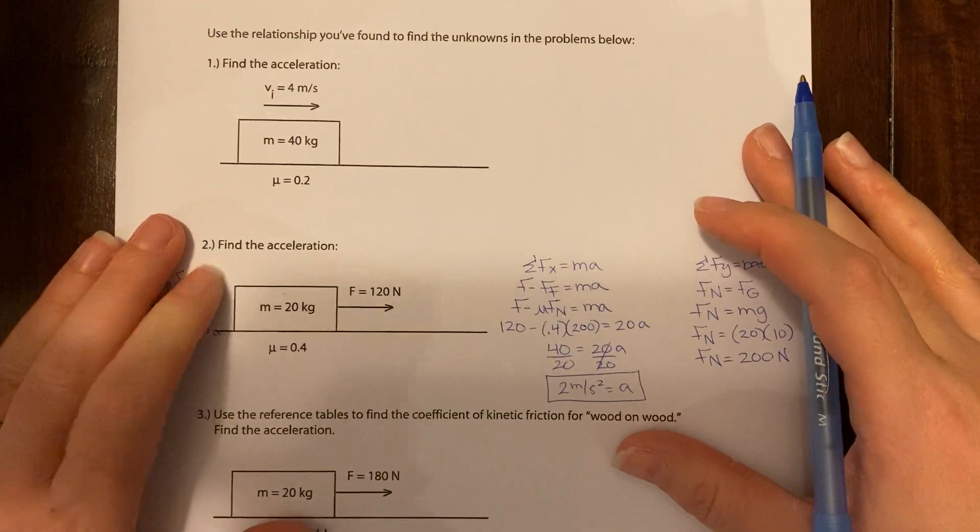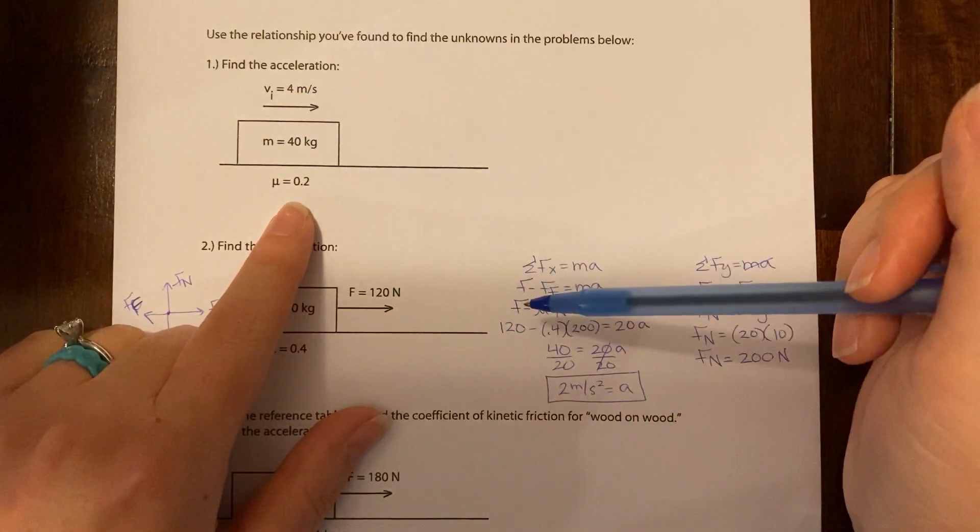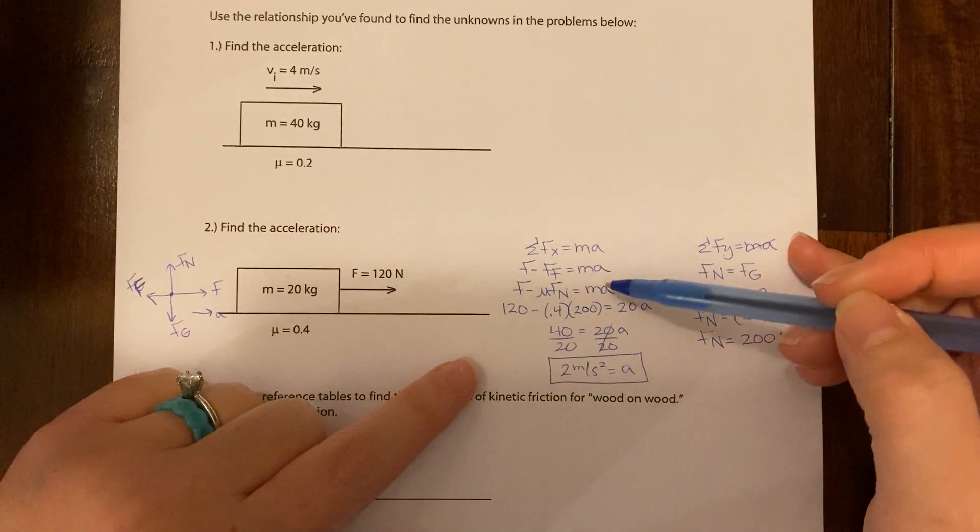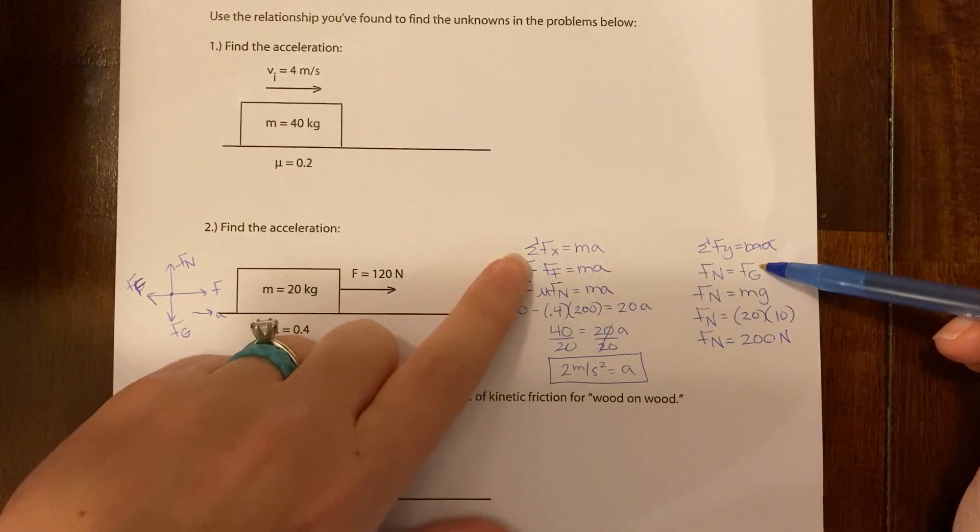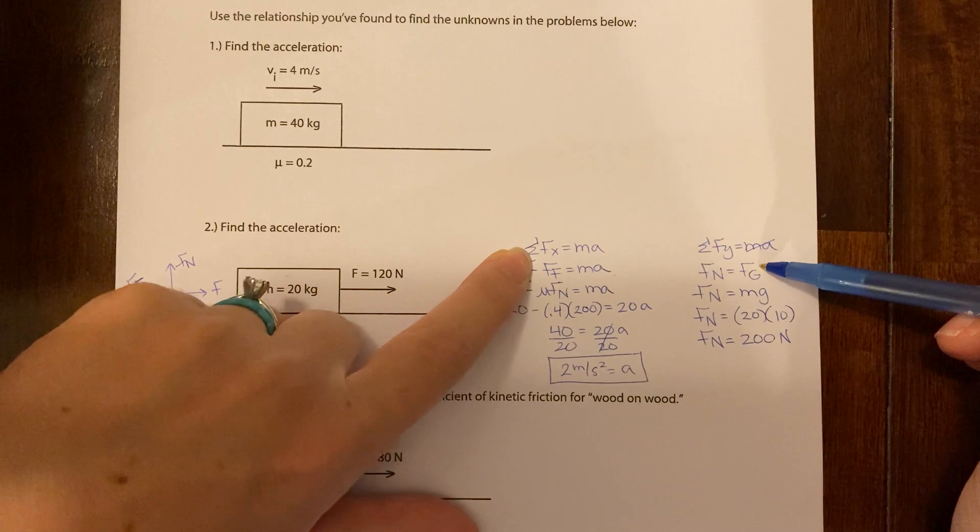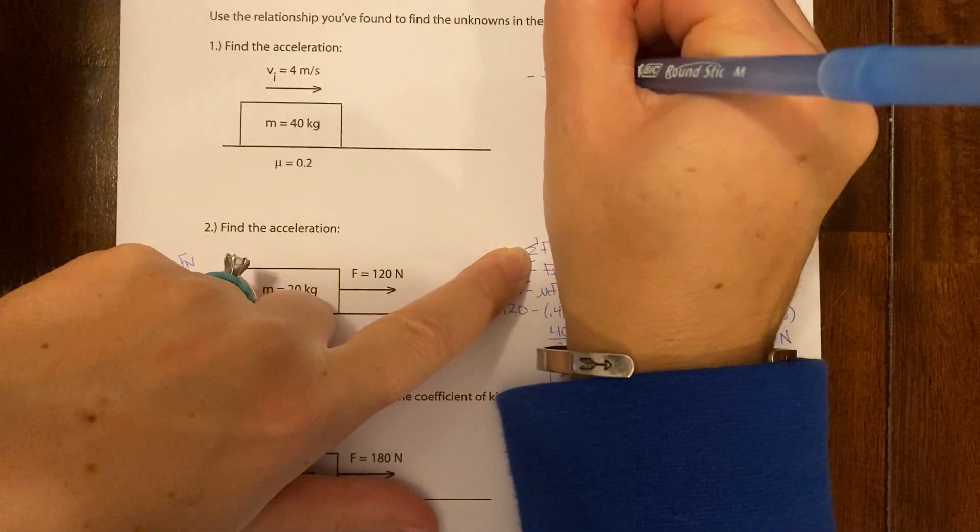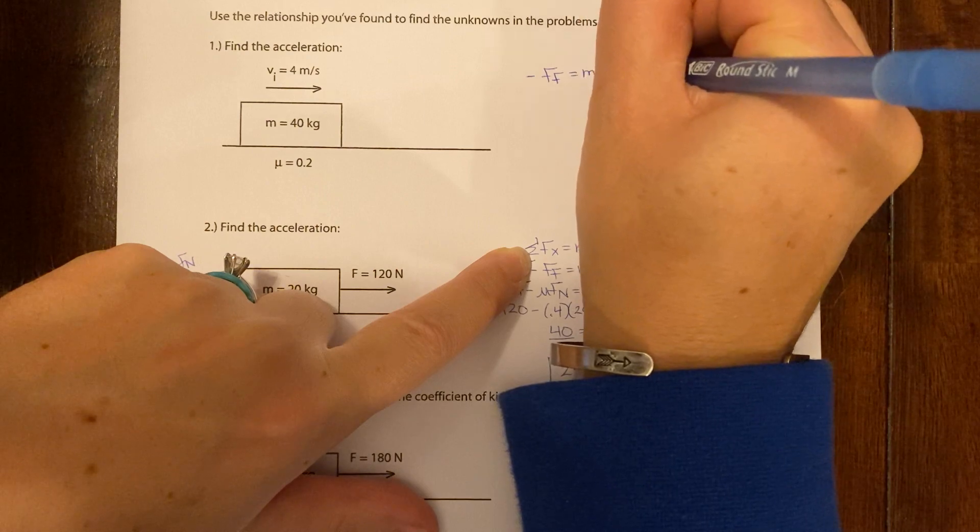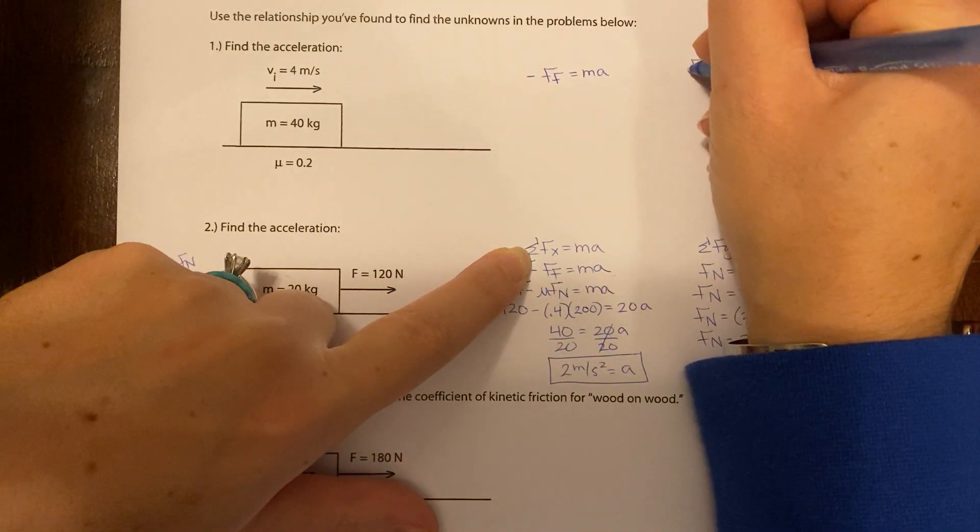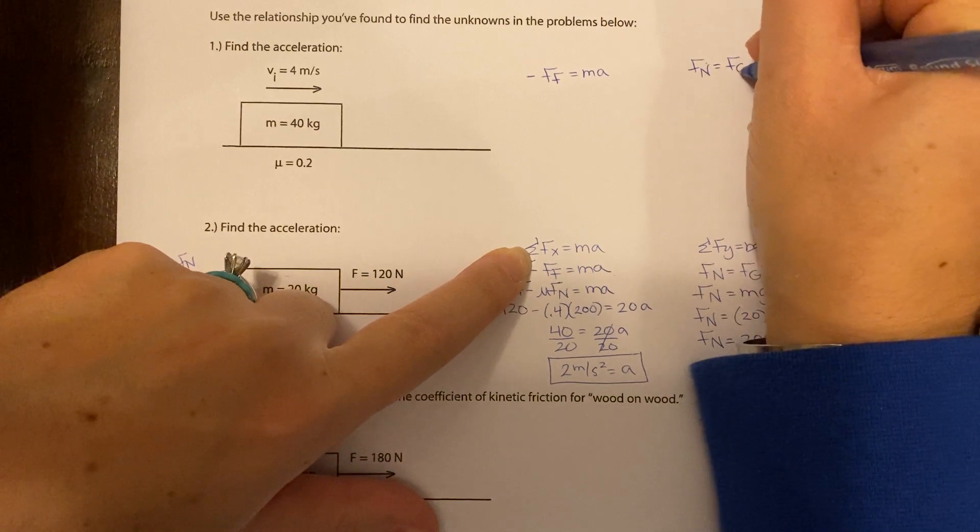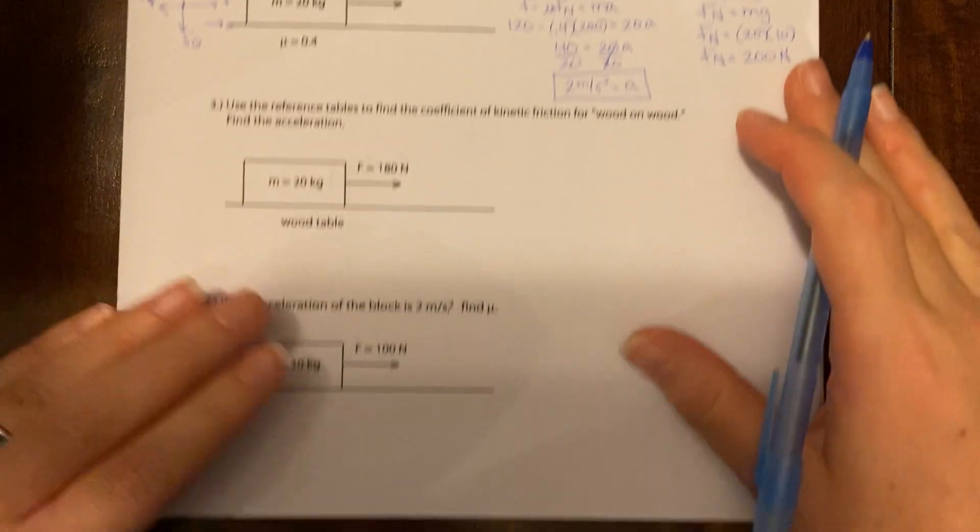Number one, same question. Find the acceleration. But do you see how there's no pulling force, right? So, what you basically have is this equation and this equation, but with no pulling force, right? So we really just have negative ff equals ma. You're going to do all the steps here. I'm just going to give you some hints here. And fn equals fg.